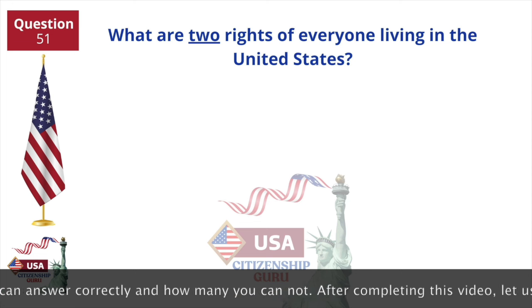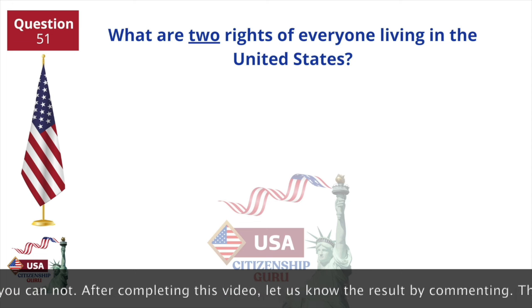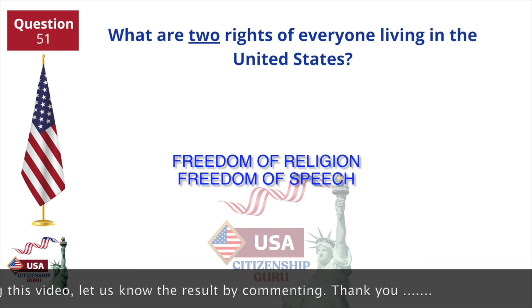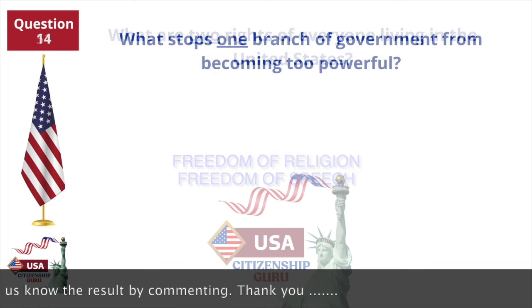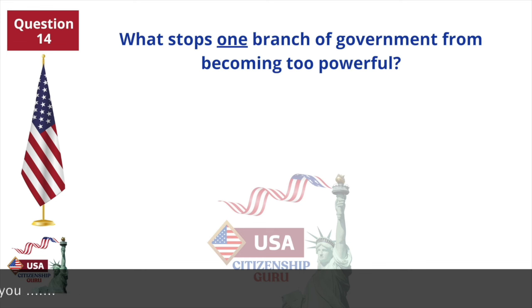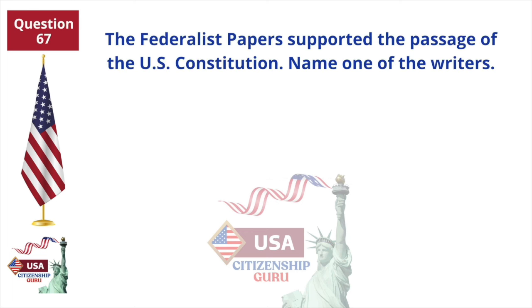What are two rights of everyone living in the United States? What stops one branch of government from becoming too powerful? The Federalist Papers supported the passage of the U.S. Constitution. Name one of the writers.